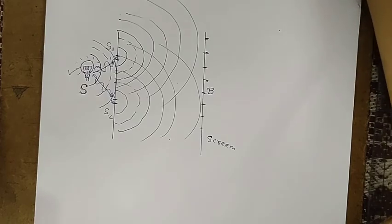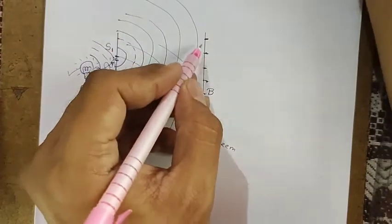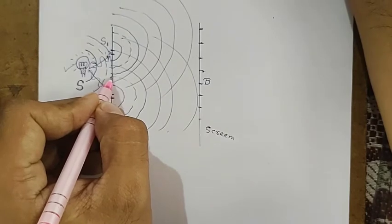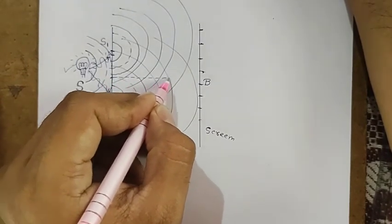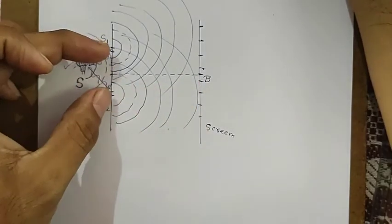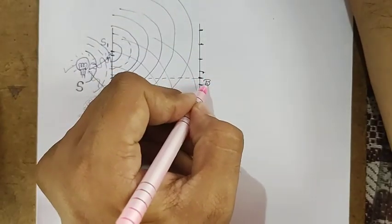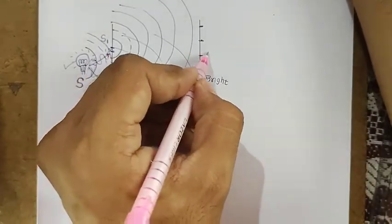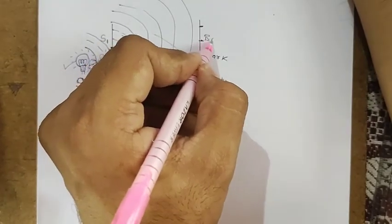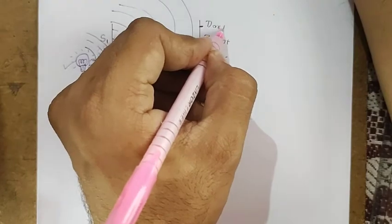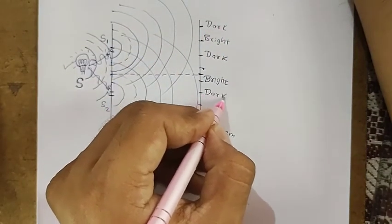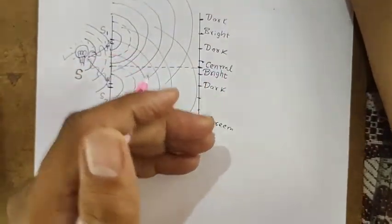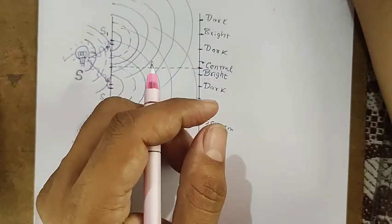Exactly at the midpoint in front of S1 and S2 on the screen, always a bright point is formed, which we call the central bright. Then dark comes, then again bright, then again dark — that is how the interference pattern is obtained. Central bright is also called the zeroth bright.